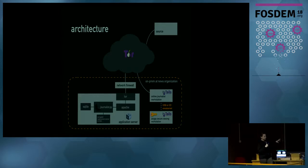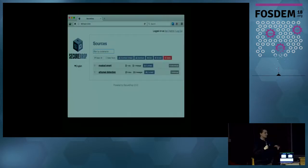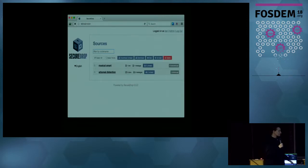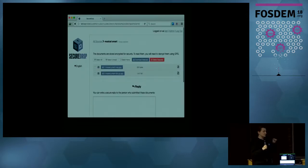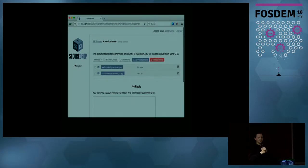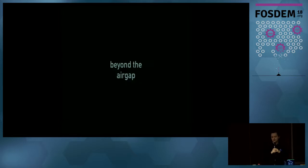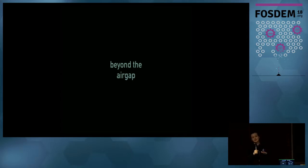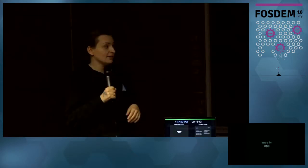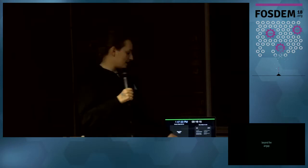This is the journalist interface — pretty simple. They can also send replies to sources using the journalist interface for long-term interaction. One issue is that this procedure is very laborious. Also, the air-gapped machine is not getting automatic security updates because we put epoxy in the network port, so it's showing some age in some cases.